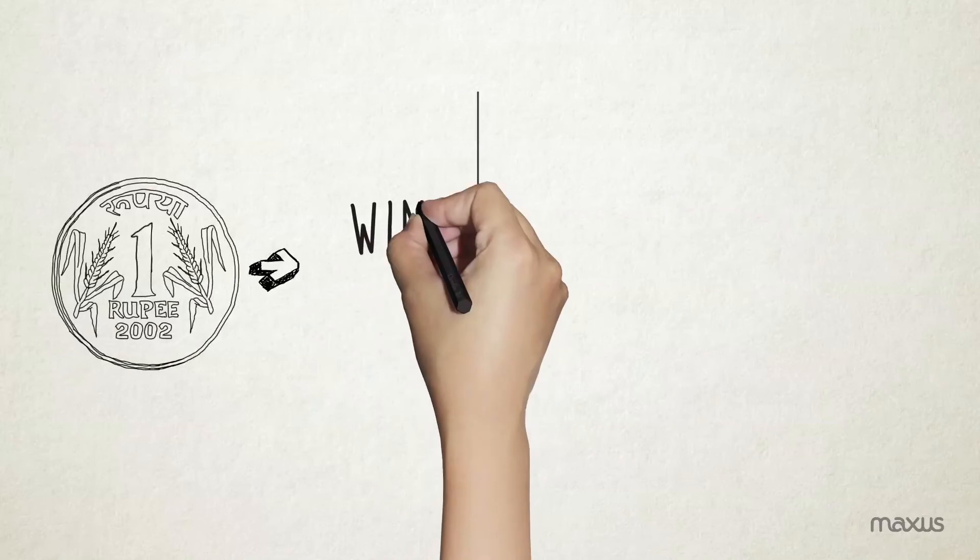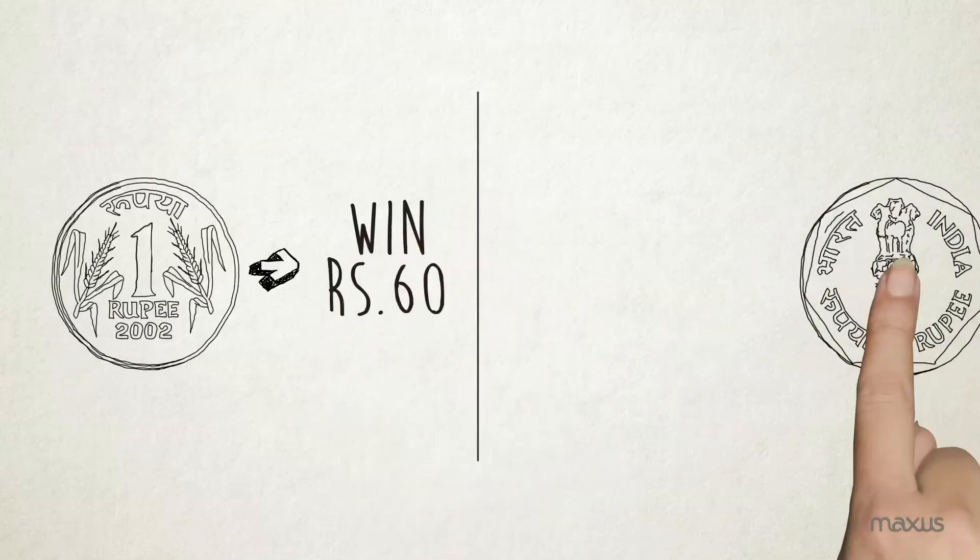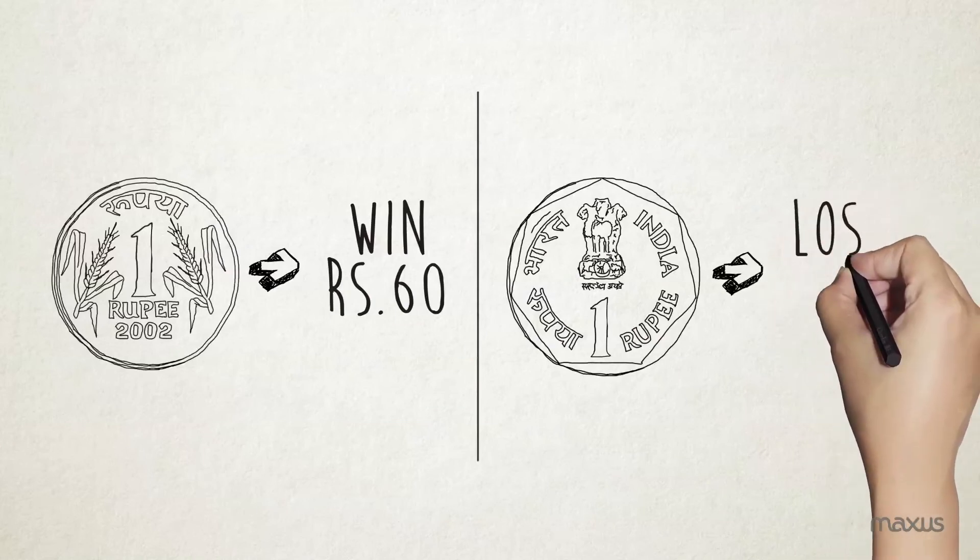In each choice, if the coin lands heads, the individual would win 60 rupees. And if the coin lands tails, he would lose either 20, 30, 40, 50, 60 or 70 rupees respectively.